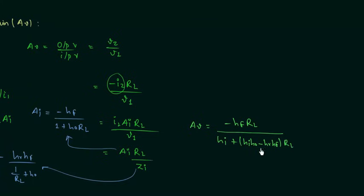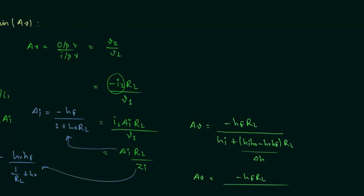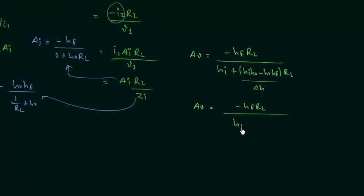In the denominator we have HI plus (HI·HO minus HR·HF) multiplied by RL. The quantity HI·HO minus HR·HF is also represented by delta H, so the final expression for voltage gain is minus HF·RL divided by (HI + delta H·RL). This expression is also true for all transistor configurations.